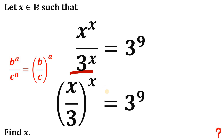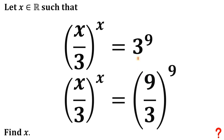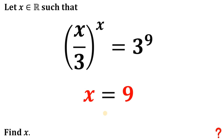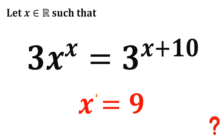Here comes the magic part. We can rewrite this 3 as 9 over 3, since 9 over 3 equals 3. Now let's focus on the position of x and 9: we have x here, we have 9 here, we have x here, we have 9 here, and a common denominator of 3. Therefore, we can say that x is equal to 9. That is our answer. Since we know there is only one real value of x satisfying this equation, our answer must be x equals 9.